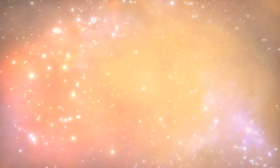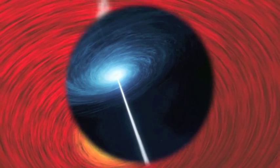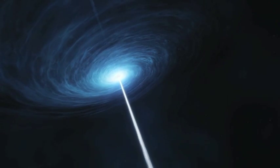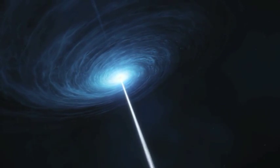Thanks to this data, it has been possible to estimate that the overall mass of water surrounding the APM 08279 plus 5255 monster was about 25,000 times the mass of the sun, or also 36 million times the mass of Earth's hydrosphere.